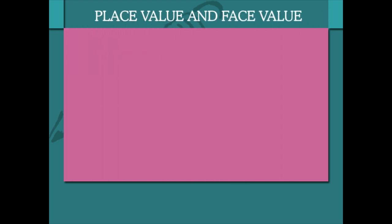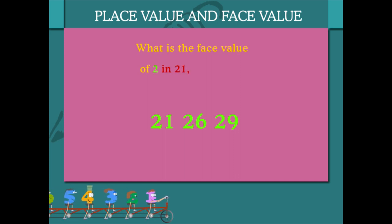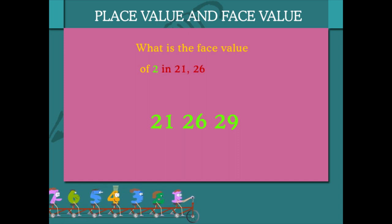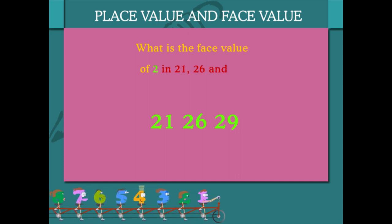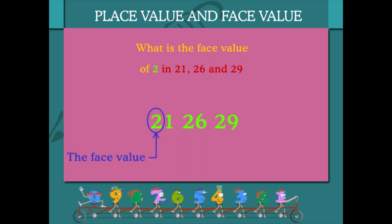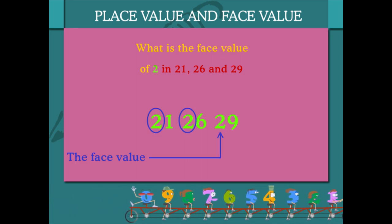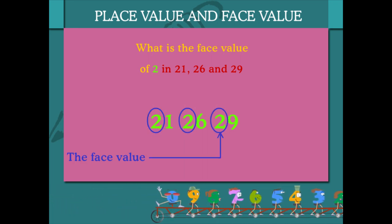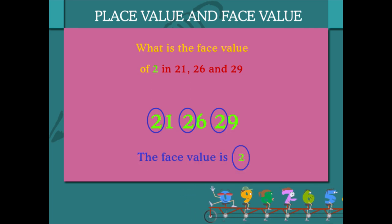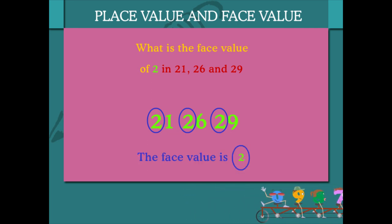Place value and face value. Here are three numbers. What is the face value of 2 in 21, 26 and 29? Face value of any digit always remains the same in all the numbers. The face value is 2.